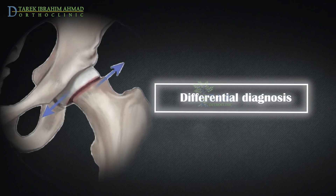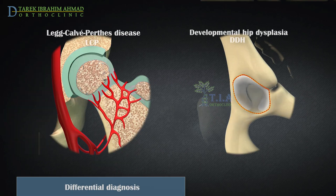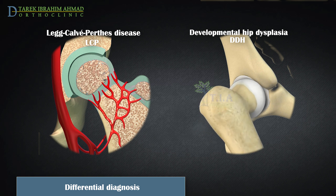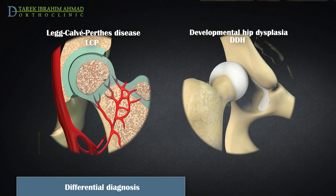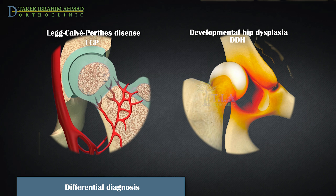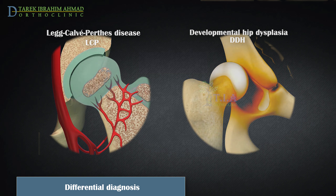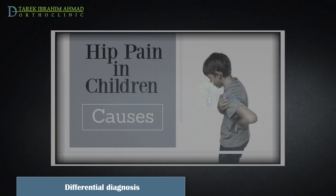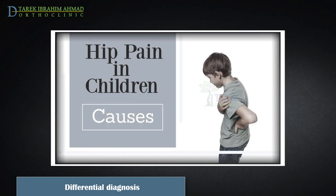Differential diagnosis: avascular necrosis of the hip, Perthes disease, and developmental dysplasia of the hip with late diagnosis in older children and adolescents may present in a manner similar to SCFE. Other causes of hip pain and limp in children are discussed in a video published under the name, Causes of Hip Pain in Children.